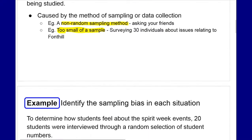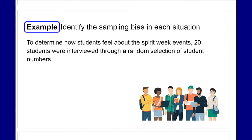Let's look at a couple of situations where there might be sampling bias. To determine how students feel about spirit week events, 20 students were interviewed through a random selection of student numbers. Where is the sampling bias here? You have to think about what the population is — we're looking at students, so we're trying to see what the entire student body thinks about the spirit week events. We're only interviewing 20 students, and they were randomly selected.